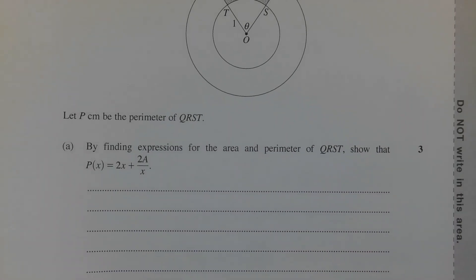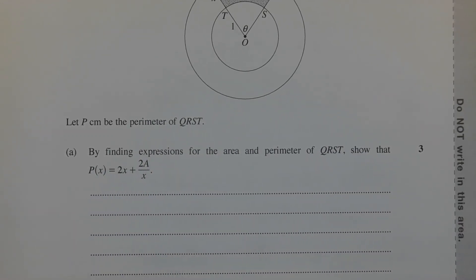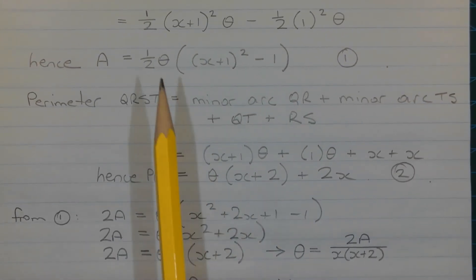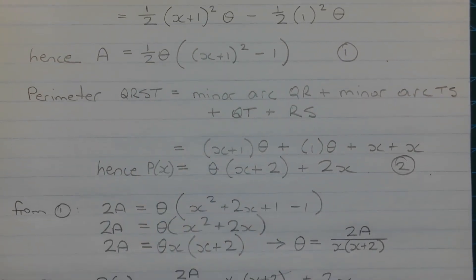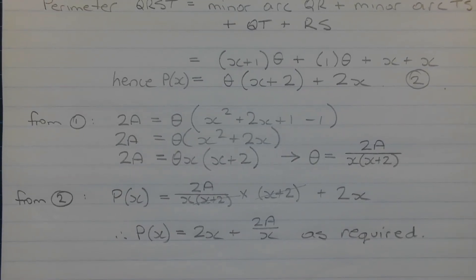Looking at what we're asked to show in Part A, we need p of x equals 2x plus 2a over x. Notice there's no theta variable here, which is a strong clue. What we need to do is use equations 1 and 2 simultaneously by eliminating theta. From equation number 1 — the area equation — we want to make theta the subject and then substitute that for theta in equation number 2, giving p of x in terms of x without theta.